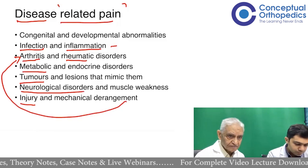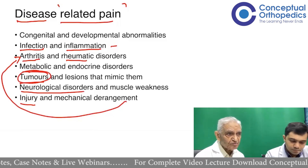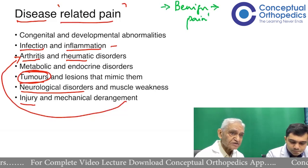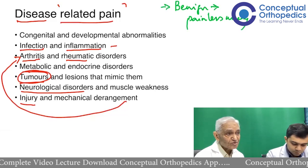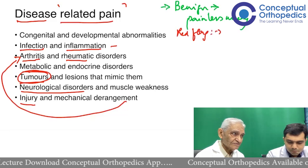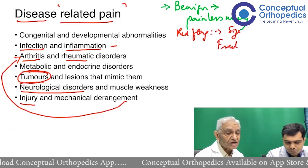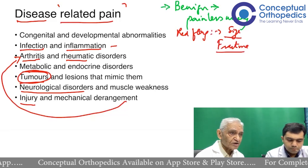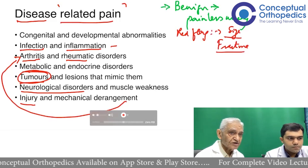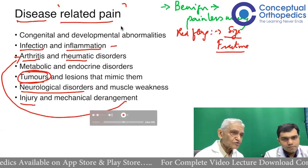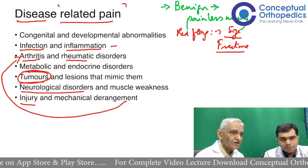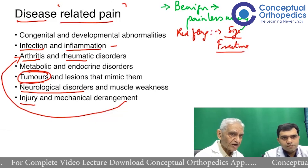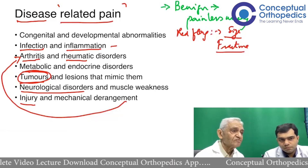Almost all benign tumors of bones and joints are painless unless they become too large and interfere with neighboring joint mechanical function. Almost all malignant tumors are painful — in the initial stages the pain would be less, but as the tumor grows, the pain becomes severe and constant. Benign tumors like osteochondroma, chondroma, osteoma, and exostosis are practically painless; deep pressure may cause some discomfort, but otherwise they are painless. A malignant tumor has constant pain — sometimes less, sometimes more — with very severe pain on palpation or pressure.